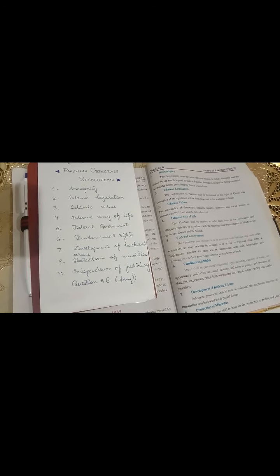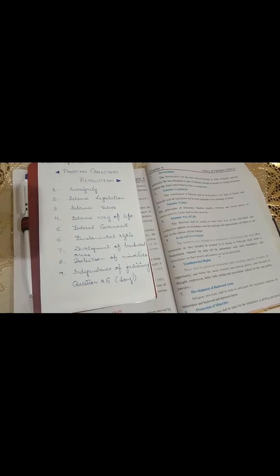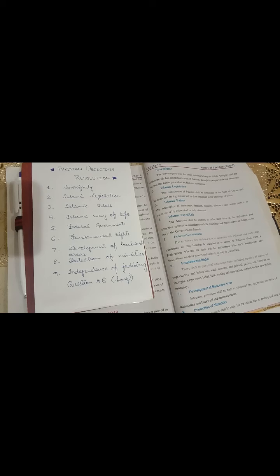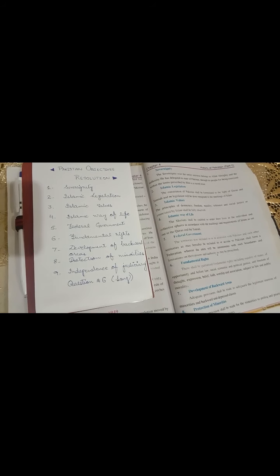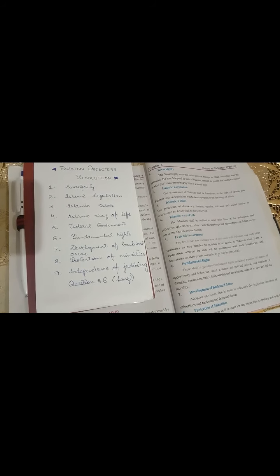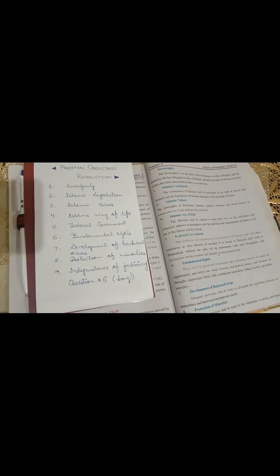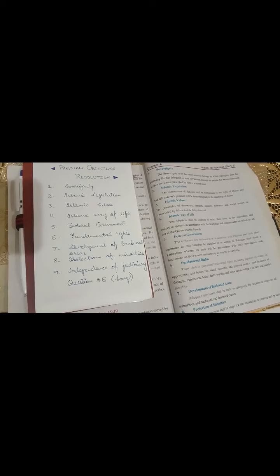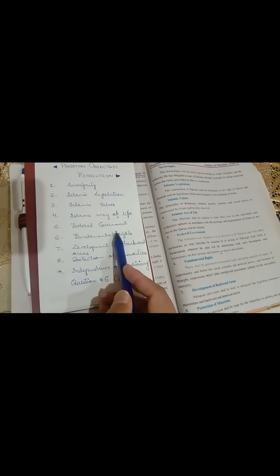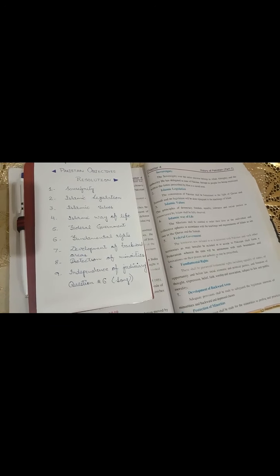Six point is fundamental rights. جو آپ کے بنیادی حقوق ہیں ان کا خیال رکھا جائے گا جیسے کہ right of political justice, freedom of thought, expression, belief, faith, worship اور اسی طرح equality of status, your right to own property, law, justice. These are all the things which comes in the fundamental rights.